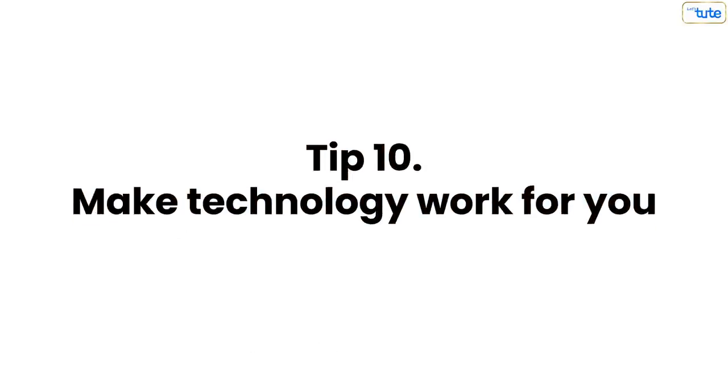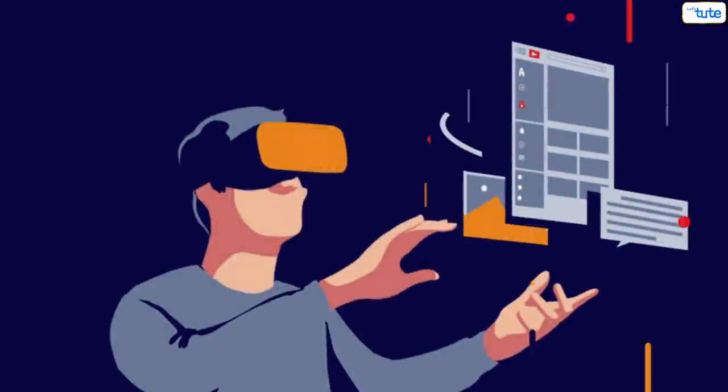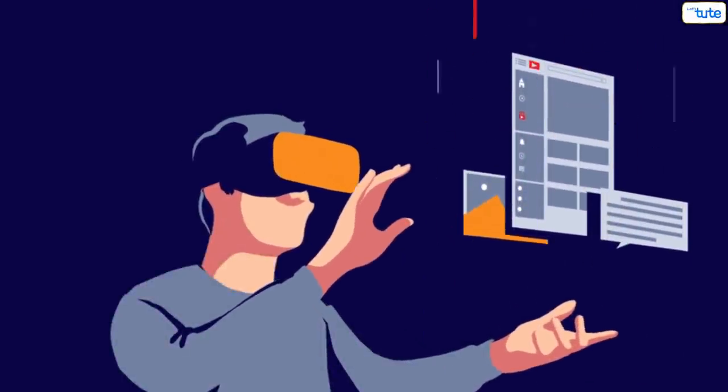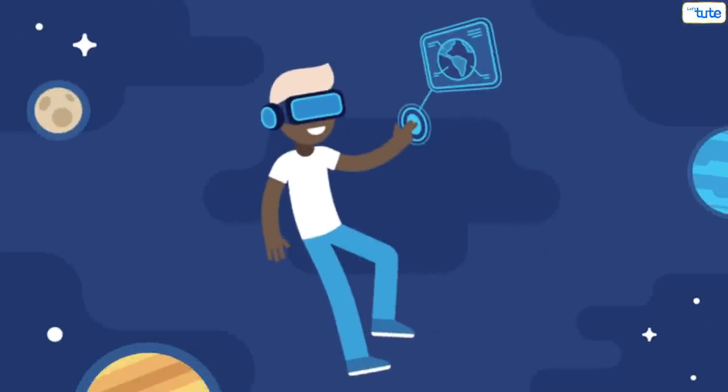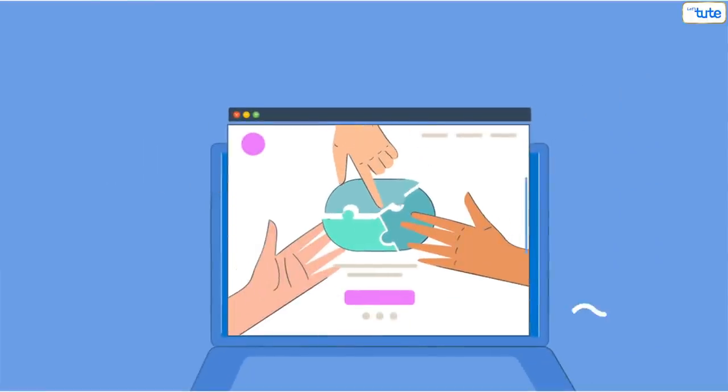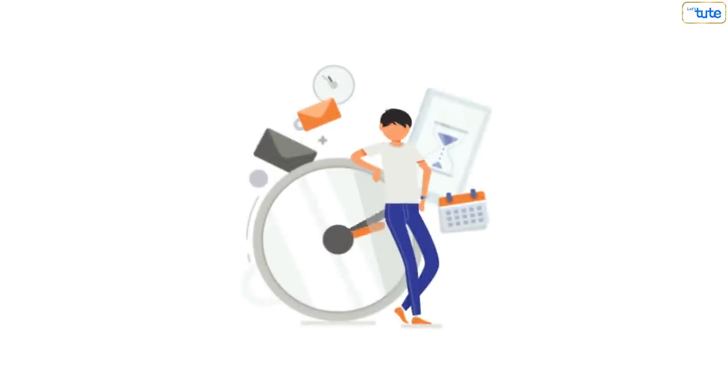Tip number 10: Make technology work for you. Technology can be an asset if you use it wisely. Use apps and tools to help you track and schedule your time. You can even block websites that are tempting and encourage you to waste your time.